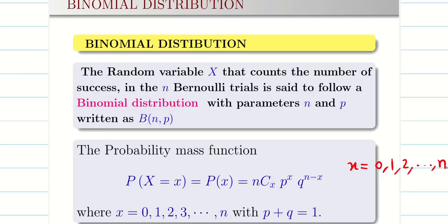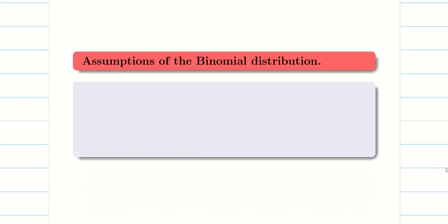The formula for binomial distribution is: P(X=x) = nCx · p^x · q^(n−x), where x takes values from 0 to n because it is a discrete distribution. The maximum value of x is n, and p plus q equals 1.